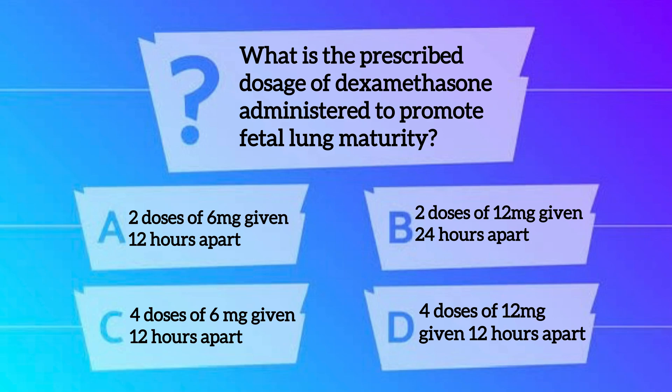Our first MCQ is: what is the prescribed dose of dexamethasone administered to promote fetal lung maturity? Option A: 2 doses of 6 mg given 12 hours apart. Option B: 2 doses of 12 mg given 24 hours apart. Option C: 4 doses of 6 mg given 12 hours apart. And Option D: 4 doses of 12 mg given 12 hours apart.